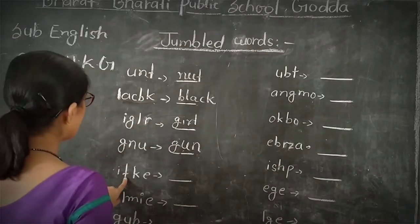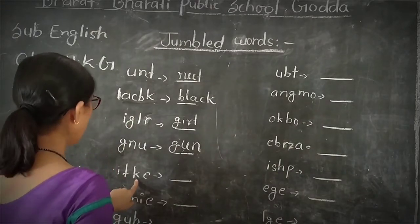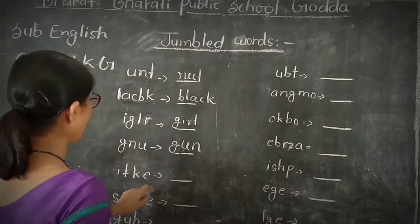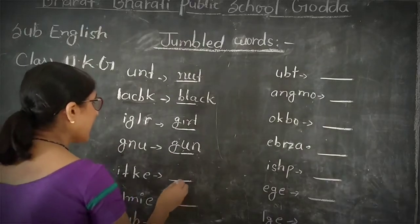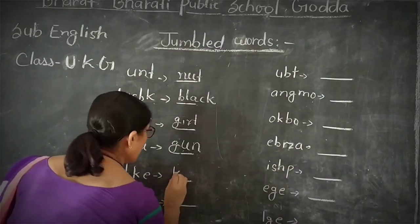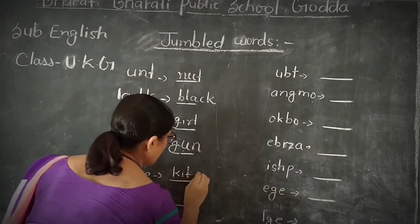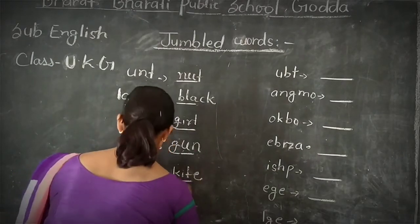Next word. I, T, K, E. We will write the correct word here. K, I, T, E — KITE. Correct.